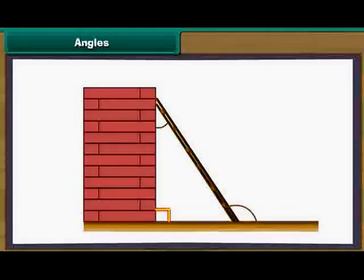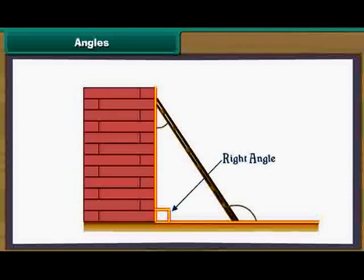Now consider the angle that the ladder makes with the wall. We take the wall as the base. The ladder is not vertical. It is tilted in. Such an angle is called an acute angle, and its measure is less than 90 degrees.